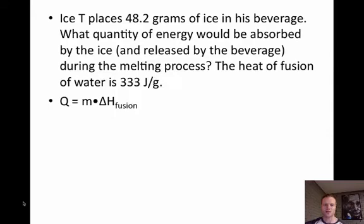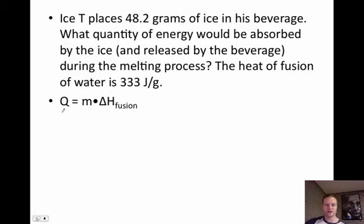The first problem deals with an individual named Iced Tea. Iced Tea places 40.2 grams of ice in his beverage. What quantity of energy would be absorbed by the ice and released by the beverage during the melting process? The heat of fusion of water is 333 joules per gram. The formula is q equals m times the heat of fusion (delta h fusion), which is 333.